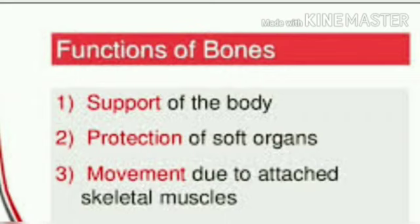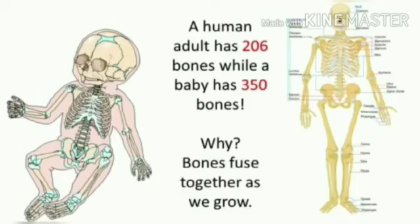Bones help in protection of soft organs and they support our muscles, and their movement is done by the bones only. A human adult has 206 bones, but at birth a baby has more than 300 separate bones, which fuse together so that an adult skeleton possesses about 206 bones.